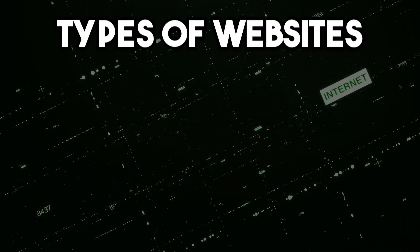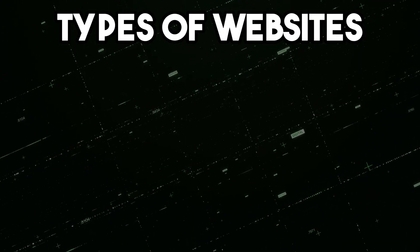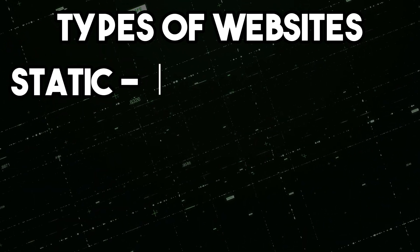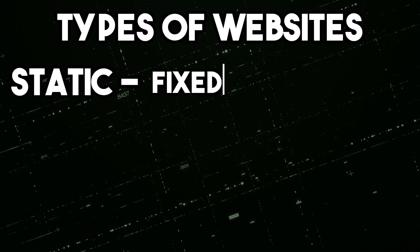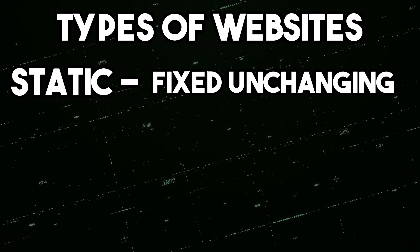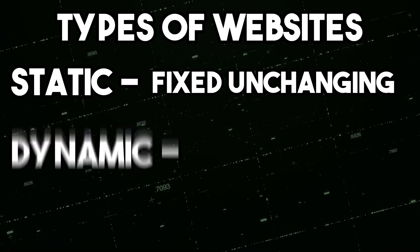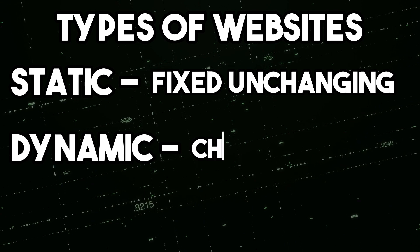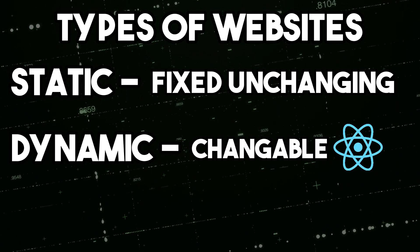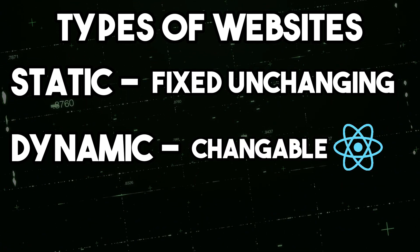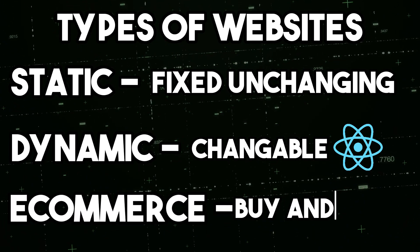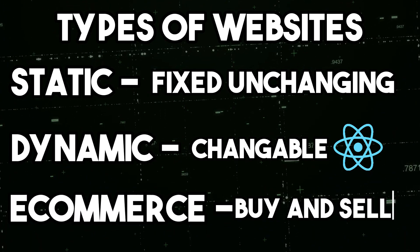Finally, let's talk about some of the different types of websites that exist. There are static websites, which are made up of fixed, unchanging web pages. Then there are dynamic websites, which use databases and programming languages to generate content on the fly. We also have e-commerce websites, which allow users to buy and sell products.